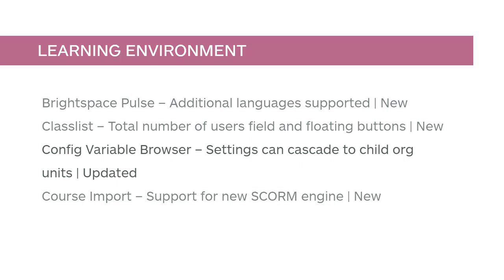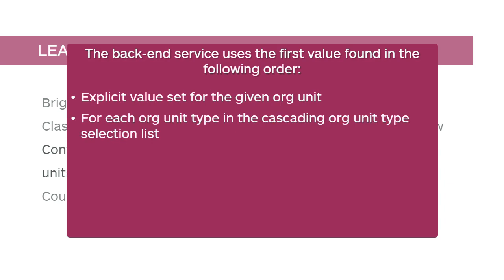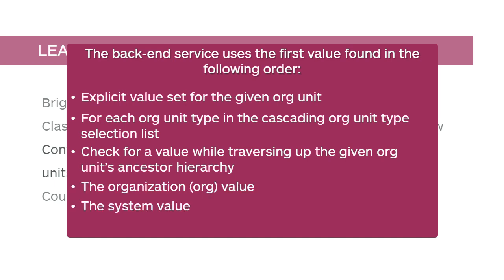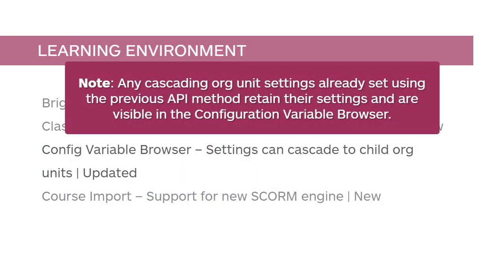You can now define whether configuration settings can cascade to child org units. The backend service uses the first value found in the following order: explicit value set for the given org unit; for each org unit type in the Cascading org unit type selection list, check for a value while traversing up the given org unit's ancestor hierarchy, considering only org ancestors that match the org type; the organization org value; and the system value. Note: any cascading org unit settings already set using the previous API method retain their settings and are visible in the configuration variable browser.